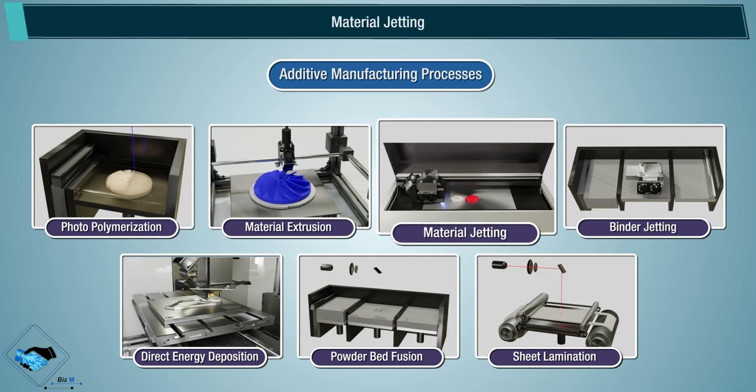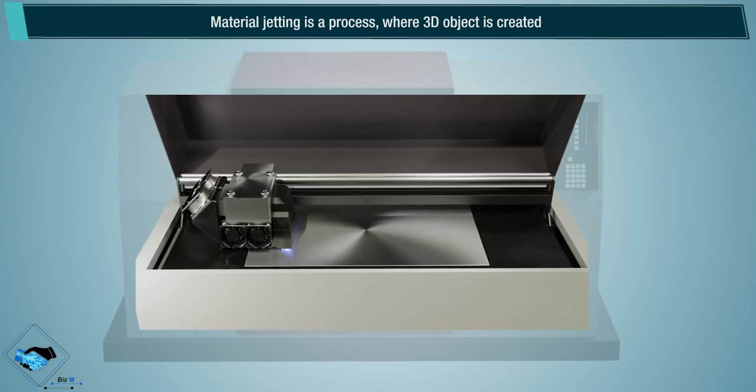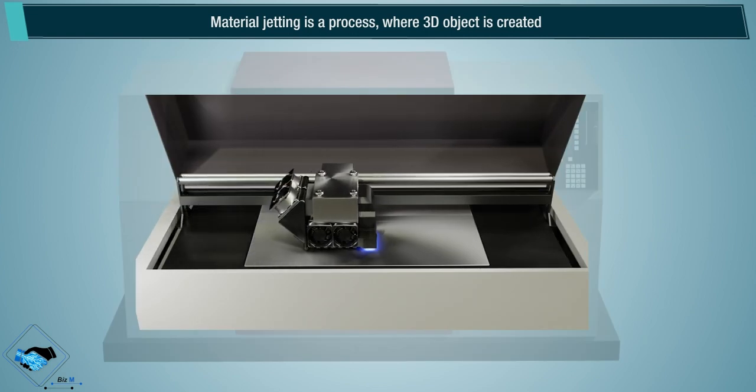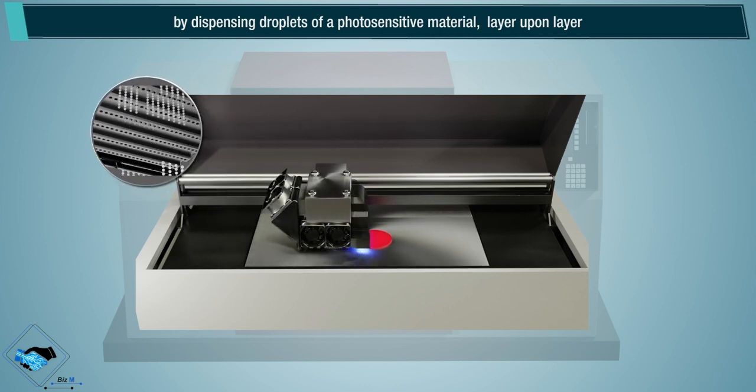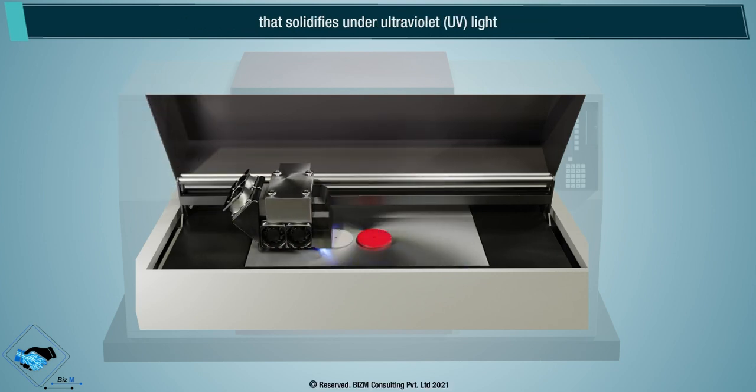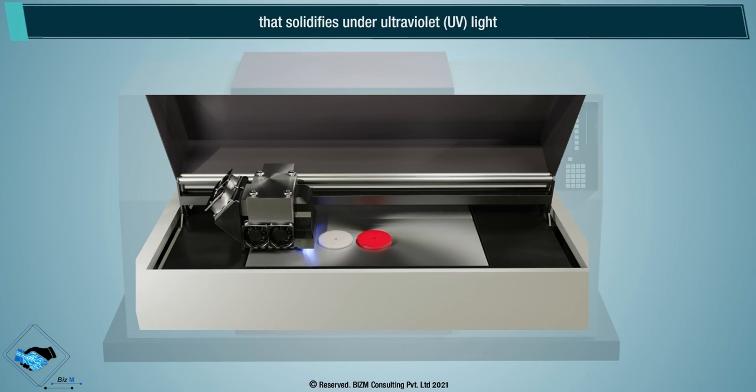Material jetting is a process where a 3D object is created by dispensing droplets of a photosensitive material layer upon layer that solidifies under ultraviolet UV light.